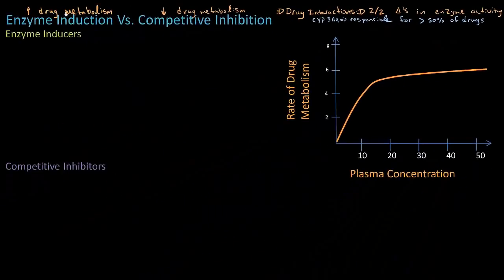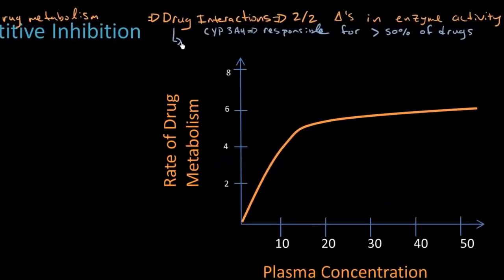So if I increase drug metabolism — increasing the number of enzymes as with enzyme induction — or decrease the number of available enzymes with competitive inhibition, that has the potential to affect the metabolism of 50% of available drugs. These types of drug interactions are therefore unexpected, unlike pharmacodynamic drug interactions.